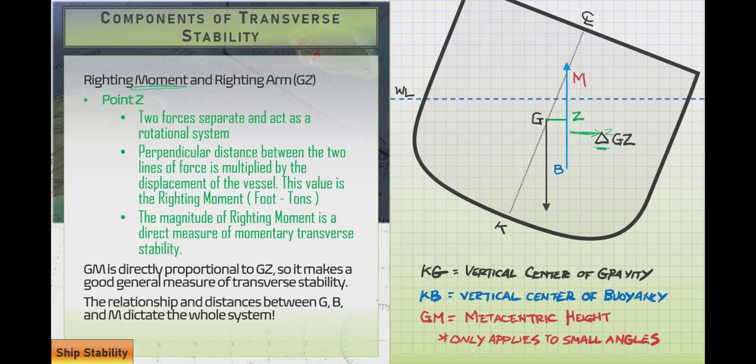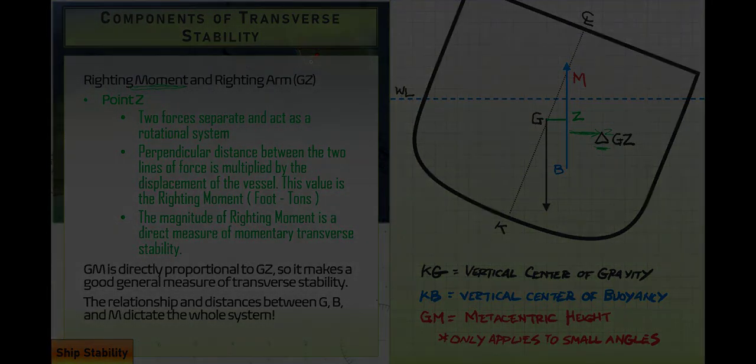Before you get too concerned about complexity, this is about the most complicated that it gets. Really what we're talking about are the relationships between point G, point B, and point M. Those three points dictate the whole system. Stay tuned to this channel. We're going to be taking a look further at stability, breaking down the different ways you can use these measurements to solve problems, especially for Coast Guard exams. We'll be taking a look at a lot of other different maritime subjects as well in the future. Thanks for watching. See you next time.